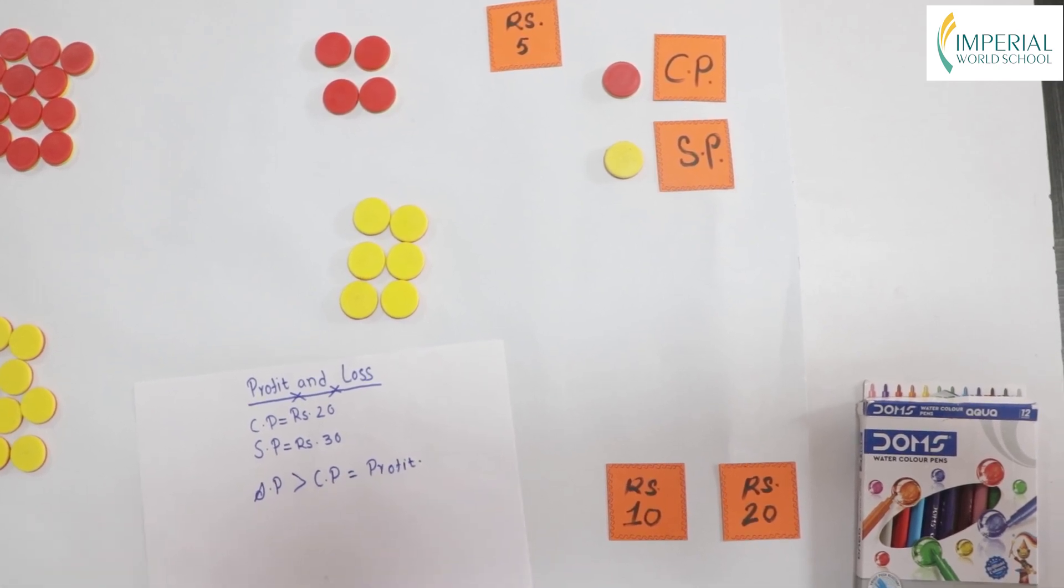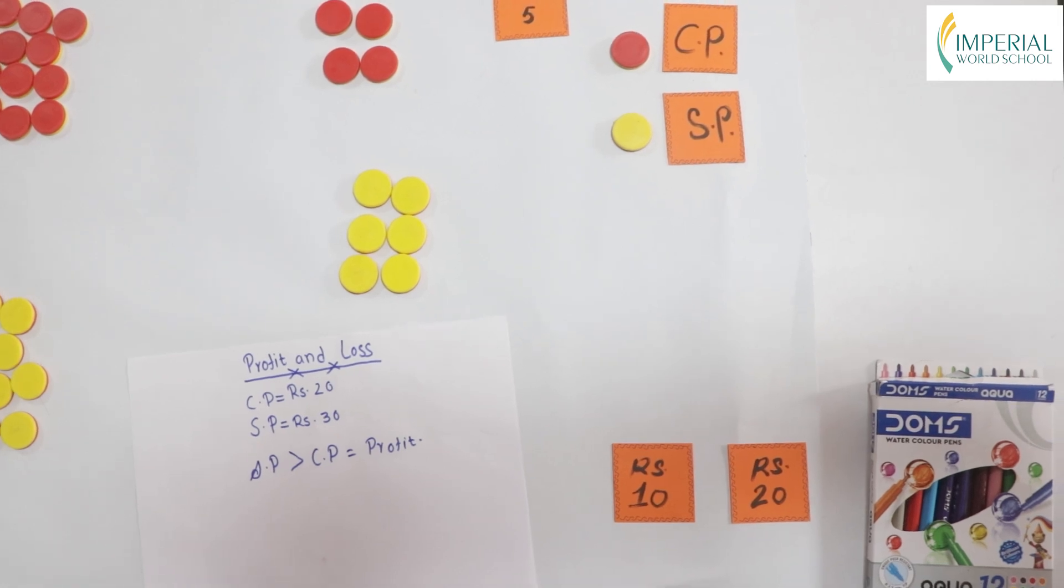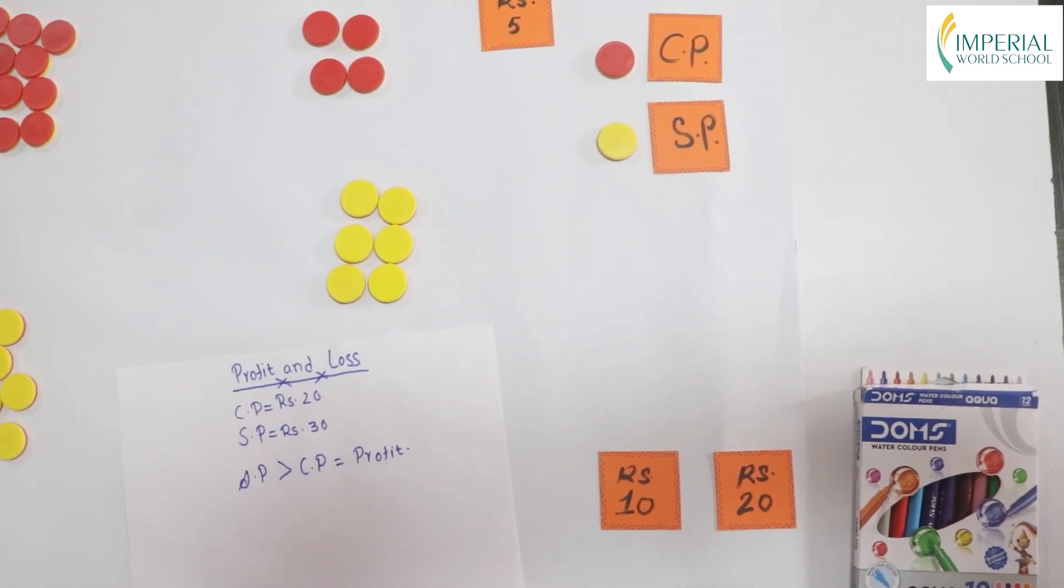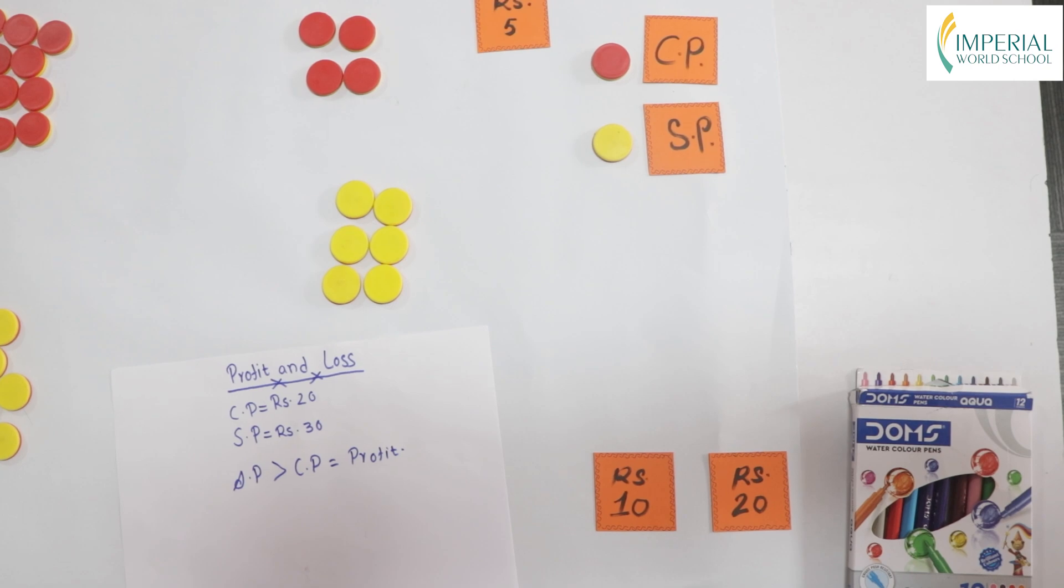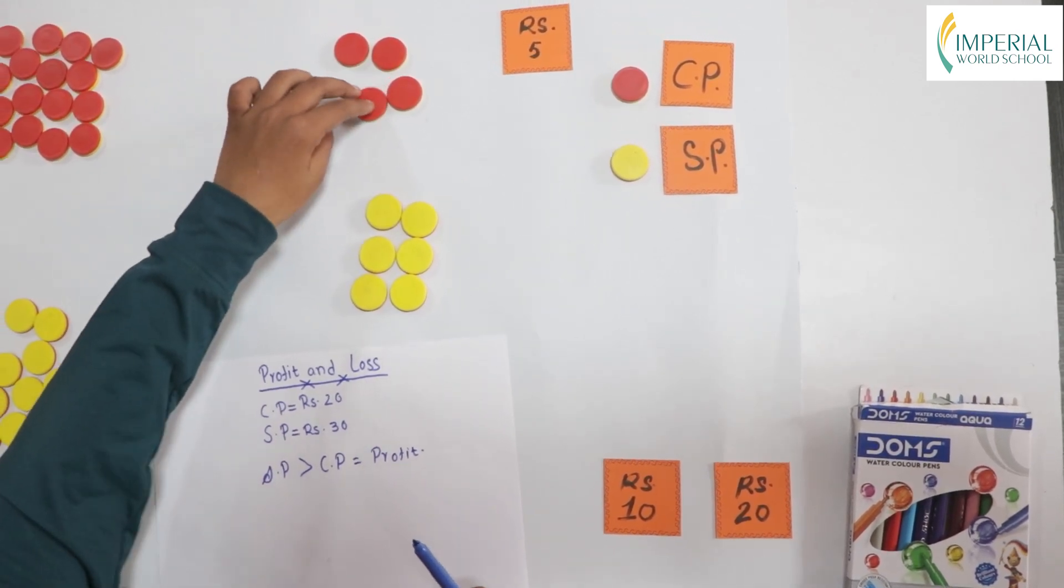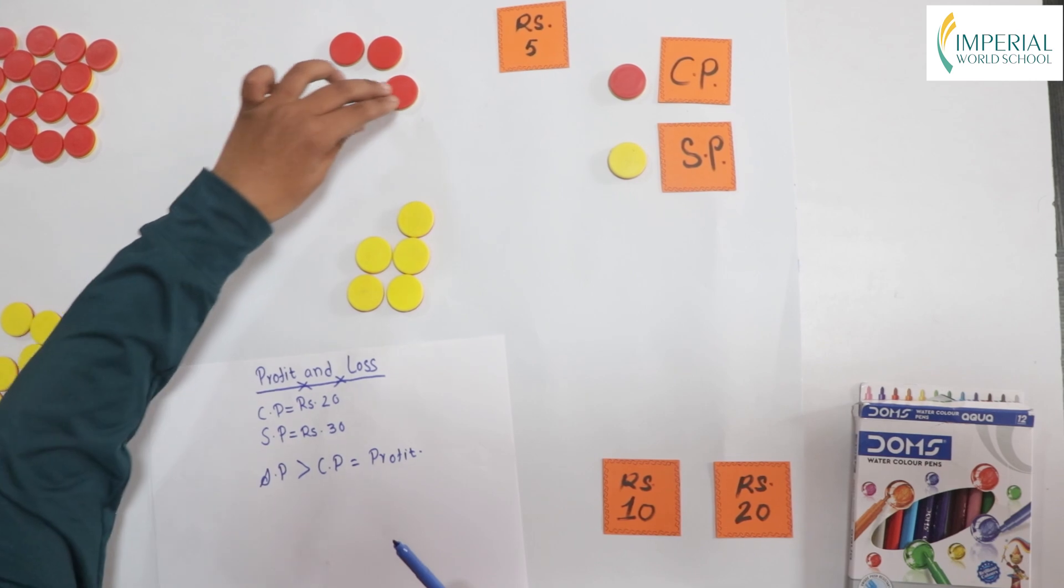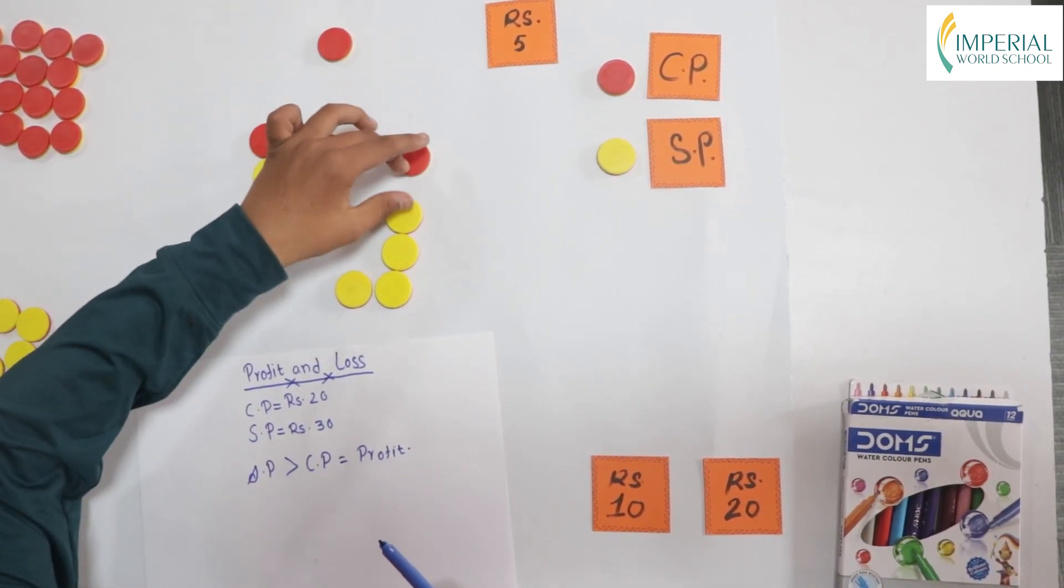Now, let's find our profit amount. To find our profit amount, we have to subtract CP from SP. Let's take 1 for 1, 2 for 2, 3 for 3.